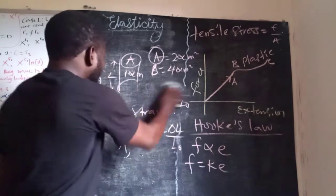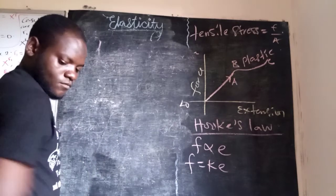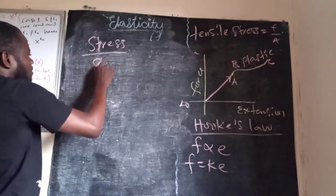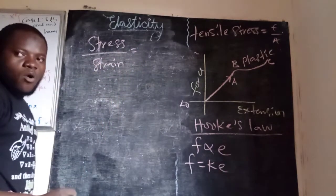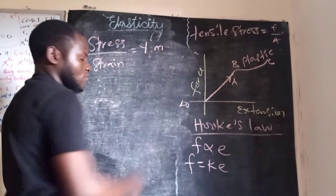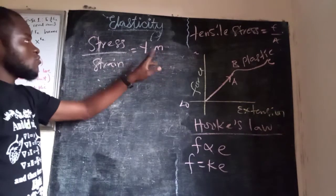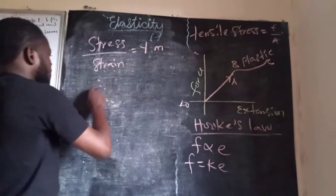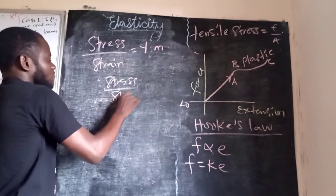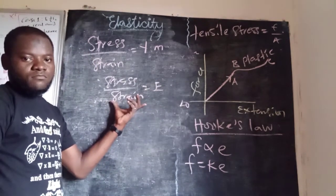Let's look at the ratio of stress to strain. If I have stress divided by strain, this gives us a quantity known as Young's Modulus. Some sources denote it with Y, some with YM, and some with E. So when you see stress over strain expressed as E, it is the same as Young's Modulus.